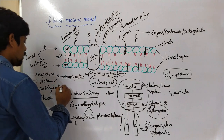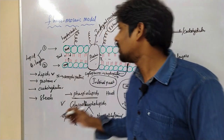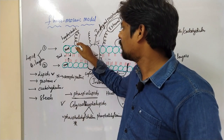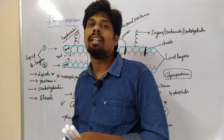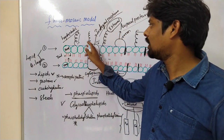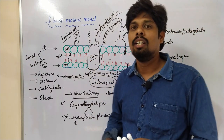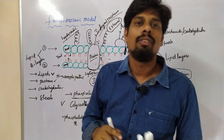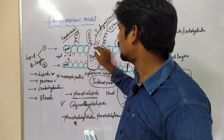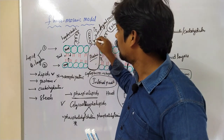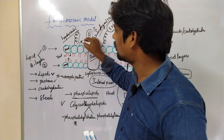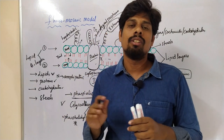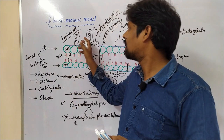Coming to carbohydrates — there are many types. Carbohydrates can be attached to proteins or to lipids. If carbohydrates are attached to lipids, such lipids are called glycolipids. If carbohydrates are attached to proteins, such proteins are called glycoproteins. The length of carbohydrates may vary from cell to cell and also within a cell — a protein or lipid can have a large or short carbohydrate chain.